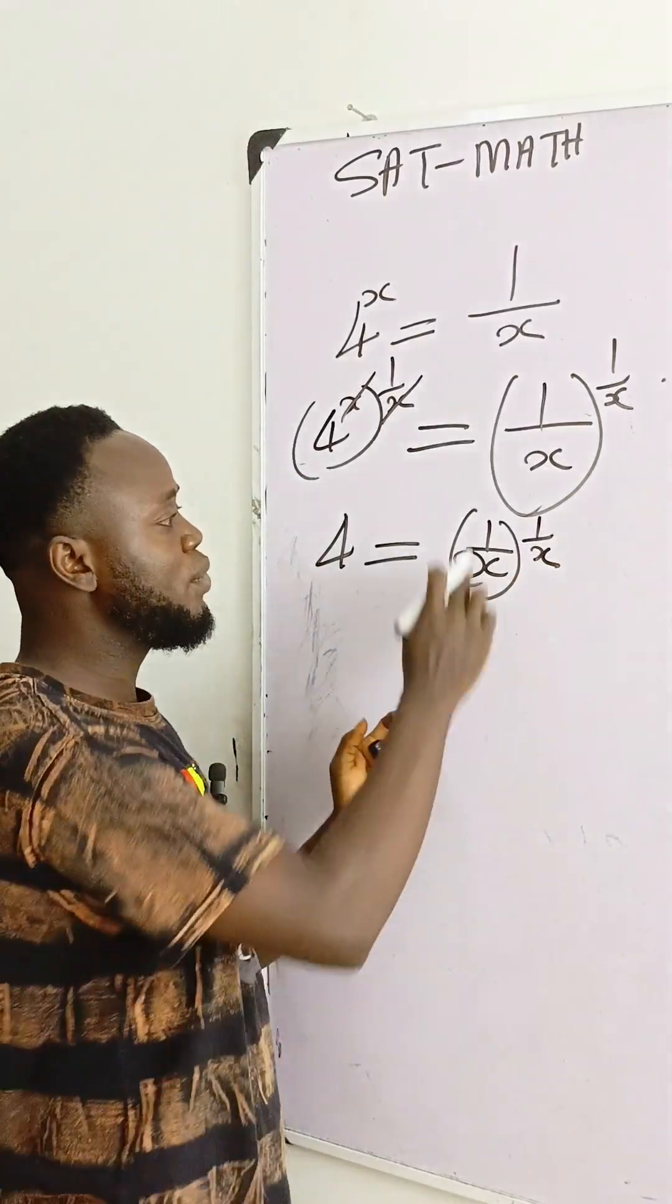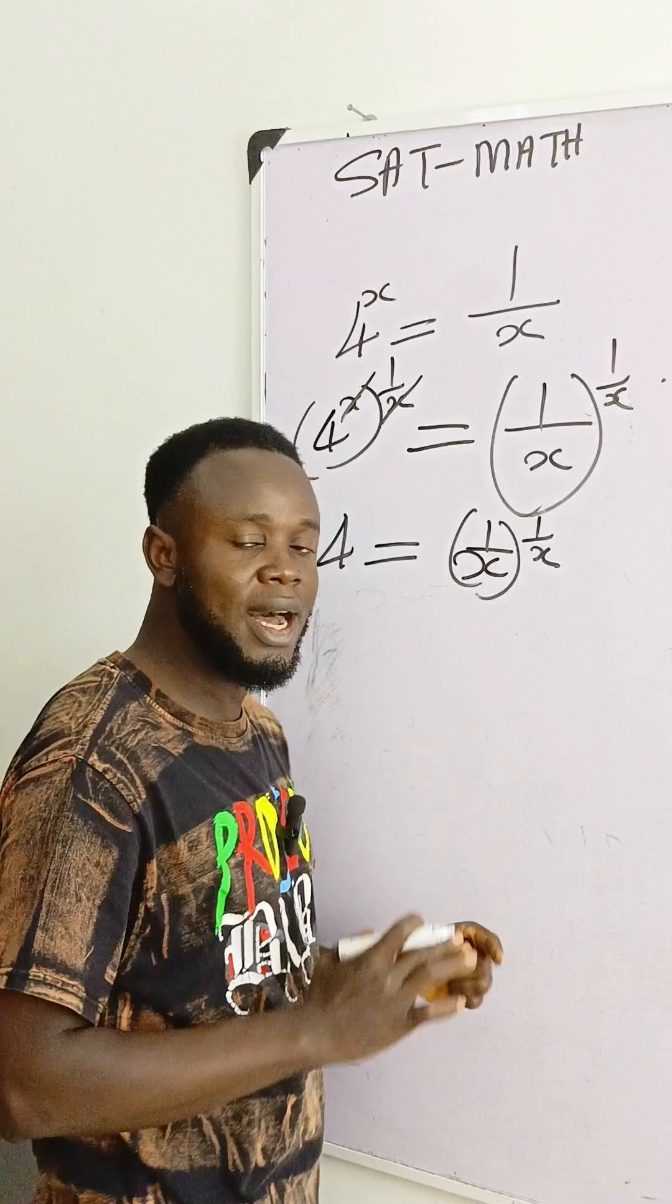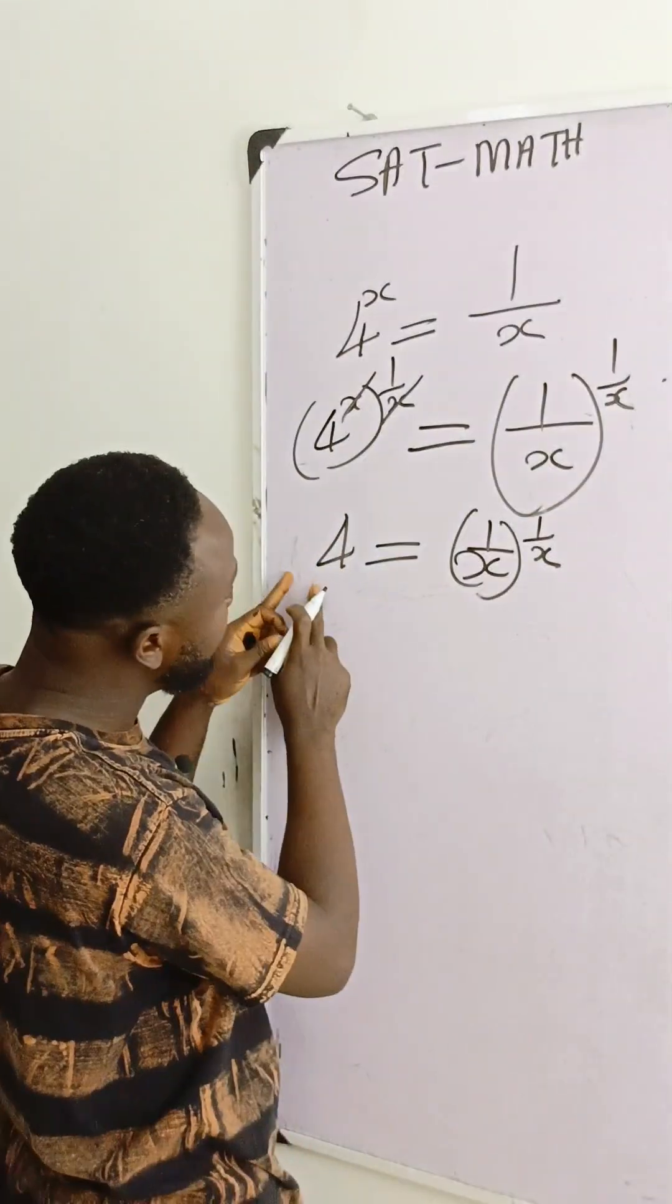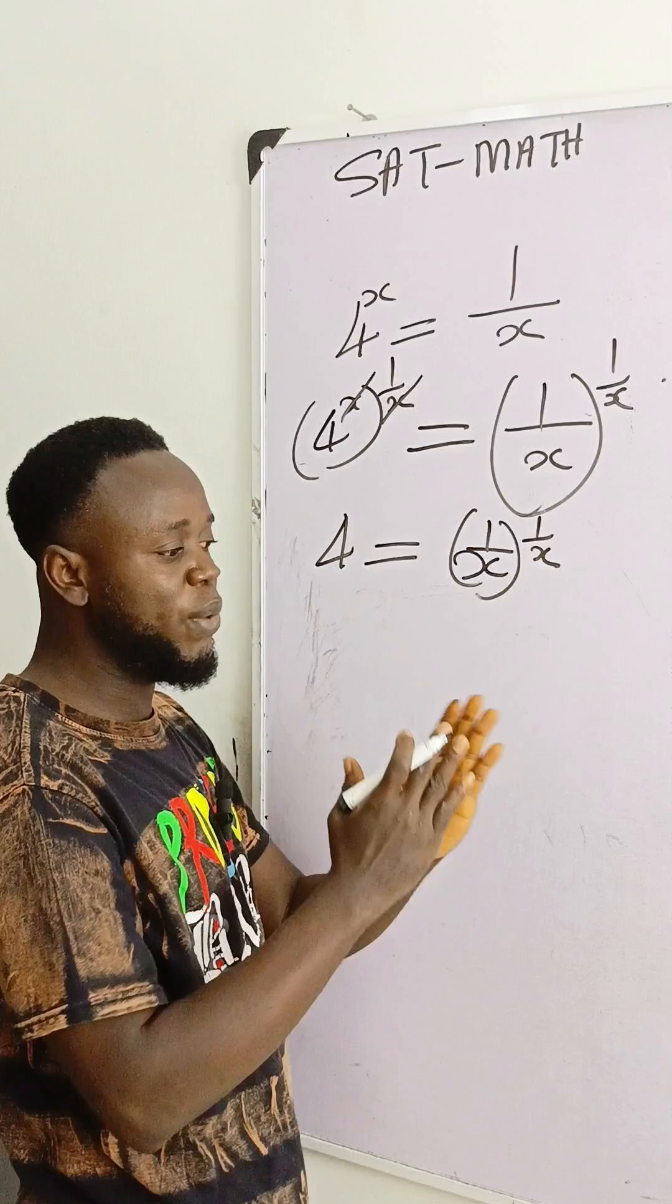We have one over x as the exponent and the base are equal. So let's express this one in such a way that the exponent and the base will also be equal, and then we can now compare.